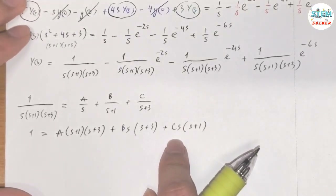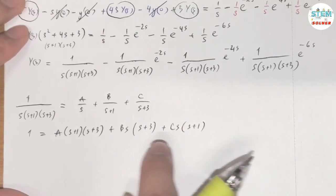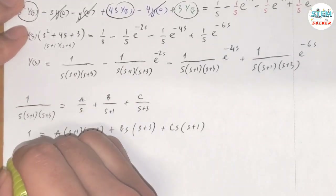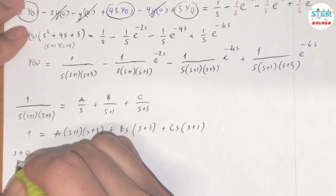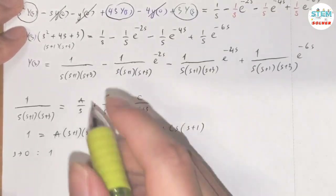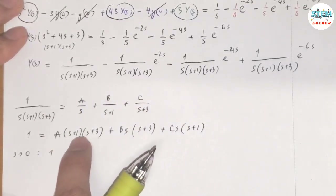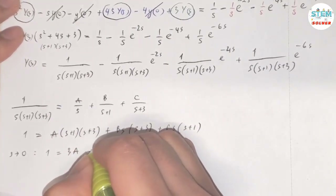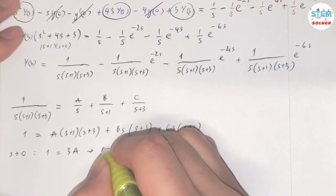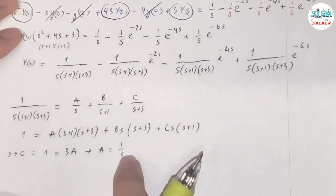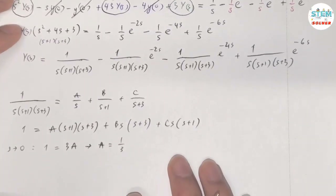Rather than multiplying out, I'll use the limit method. Let S approach 0: on the left side I have 1, and on the right side the B and C terms vanish. So 1 = A(1)(3) = 3A, giving A = 1/3.